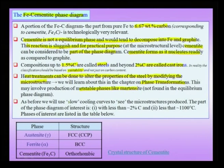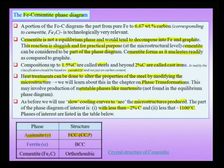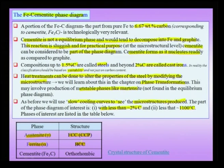We will use slow cooling curves to see how certain microstructures are produced. The part of the phase diagram of interest is less than 2 percent carbon and below about 1100°C. The important phases are: austenite (gamma) — a cubic close-packed interstitial solid solution of carbon in iron, where carbon occupies octahedral voids; ferrite — the room-temperature BCC structure of iron, also with carbon in octahedral voids; and Fe3C cementite — an orthorhombic phase that is typically very brittle.